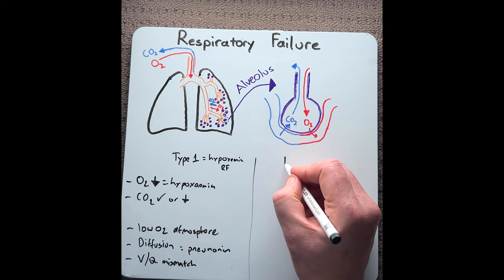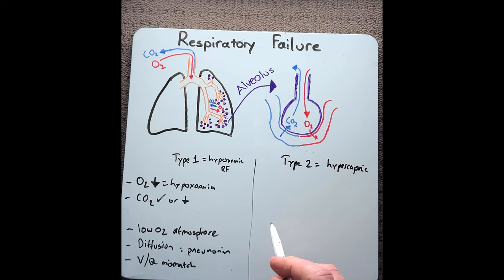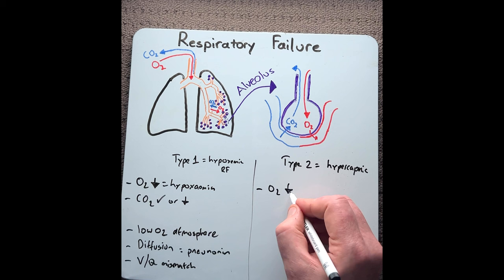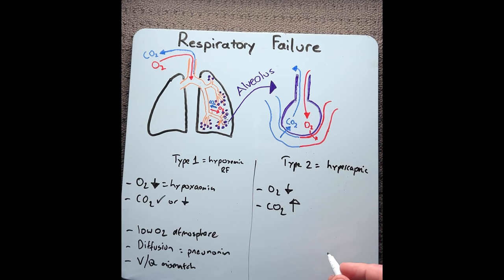The second type of respiratory failure is type 2, also known as hypercapnic. In type 2 respiratory failure, this is where the respiratory system can't provide enough oxygen into the blood, but also can't remove enough carbon dioxide out of the blood. What we would see is a decrease in O2 in the blood, hypoxemia, but we would also see an increase in CO2 in blood, which is called hypercapnia.